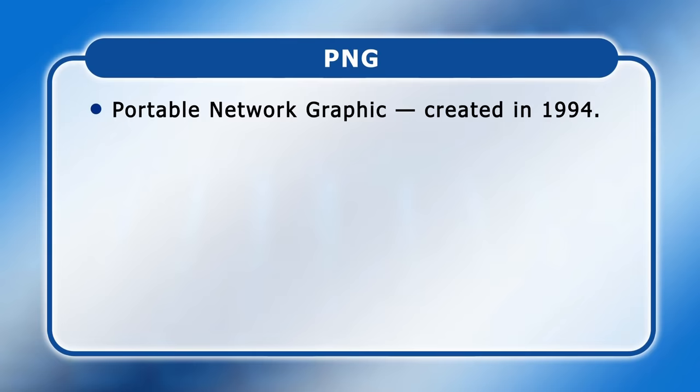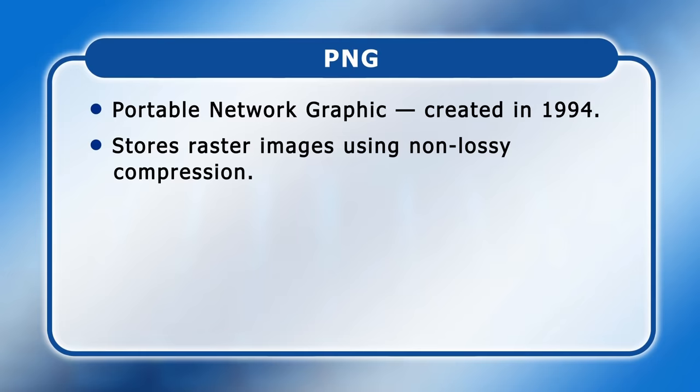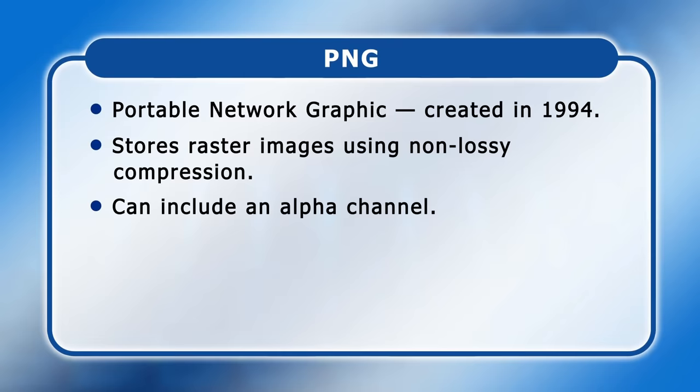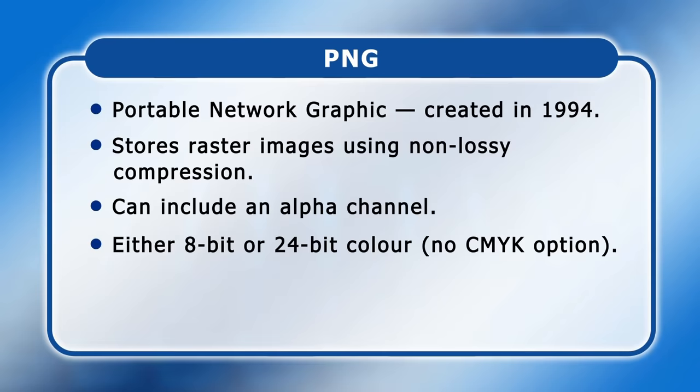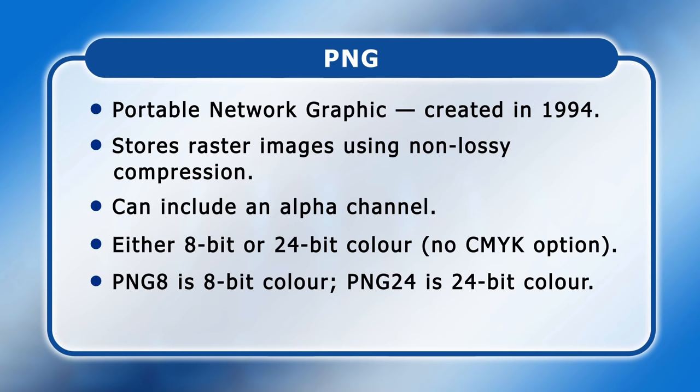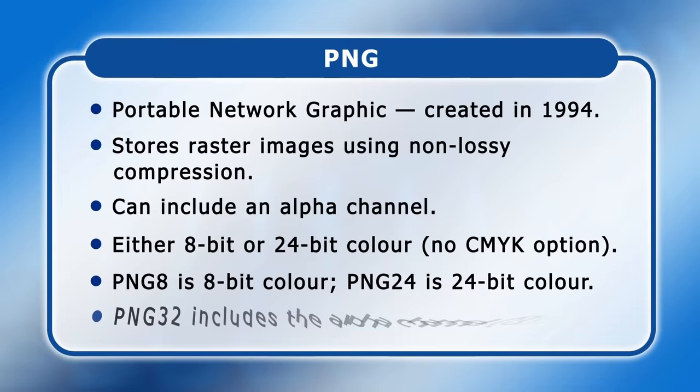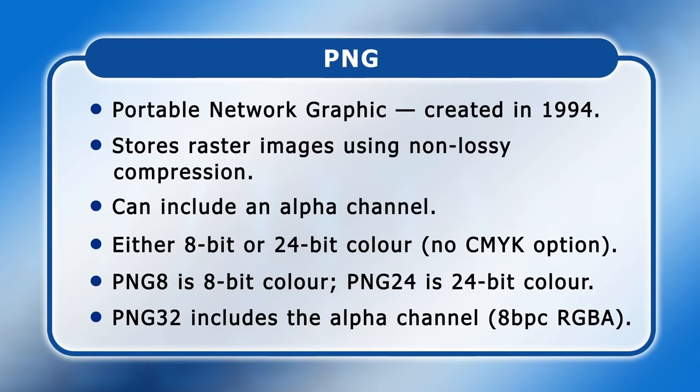PNG stands for Portable Network Graphic and was created in 1994. Like JPEG, it stores compressed raster images but here using non-lossy compression. Unlike JPEG, PNG files can also include an alpha channel, which makes them very useful for things like website logos and video captions. On the negative side, PNGs are limited to either 8-bit or 24-bit colour and can only use an RGB colour space. PNG files offering 8-bit colour are usually termed PNG-8, whilst those offering 24-bit colour are usually called PNG-24. PNG-32 files include the alpha channel, allocating 8 bits per pixel to each of their red, green, blue and alpha channels.